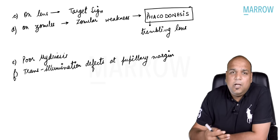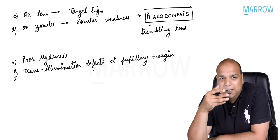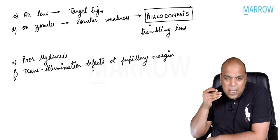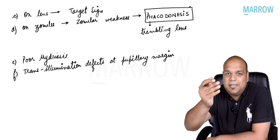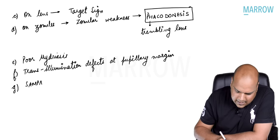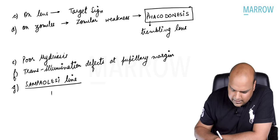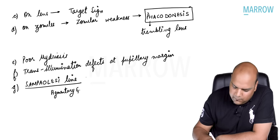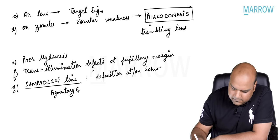Transillumination defects mean: normally the iris is an opaque tissue, but if there is iris atrophy it becomes like a mesh. Through the iris, you can see the red fundal reflex — background illumination shows through. Lastly, there is Sampaolesi's line: deposition of fibrillary material at Schwalbe's line, also seen in pigmentary glaucoma.